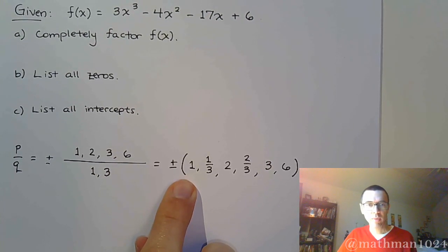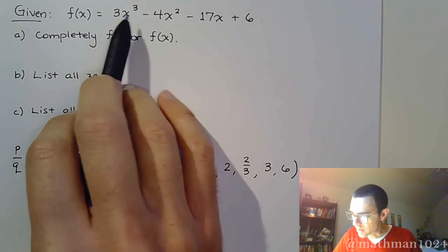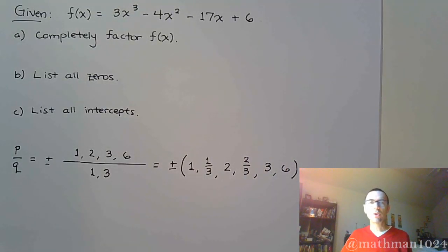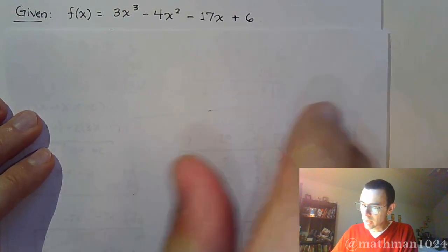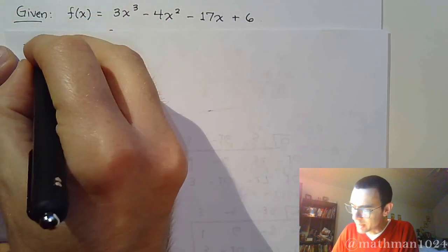So, to check to see if positive 1 works, take these coefficients and combine them: 3, minus 4, minus 17, plus 6. Does that equal 0? Very quickly, I hope you guys can see that no, it doesn't. Not even close. Let's try negative 1. Okay? So, if I try negative 1 again.